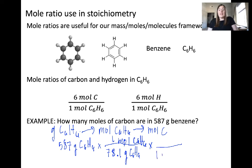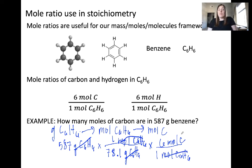We need moles of benzene on the bottom and moles of carbon on the top. When we look at the units, grams of C6H6 cancels, moles of C6H6 cancels, and we're left with moles of carbon. Starting with 587 grams of benzene and using the molar mass of 78.1 g/mol, then applying the mole ratio, I got an answer of 45.1 moles of carbon. Double-check on your calculator and see if you get the same thing.